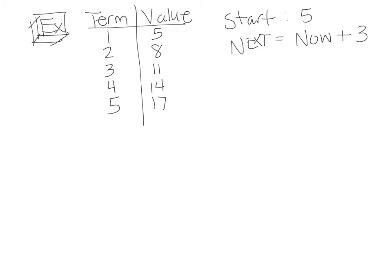Now this is where we need to come up with the explicit formula — that formula that will work for this problem every single time. What you do is look at your increase on your values. You know it increases by 3 every time. We're starting at 5; however, if we were to start at 0, what number would we actually start at? If this is increasing by 3 every time, then we use that increase — the 3 — over your change in x.